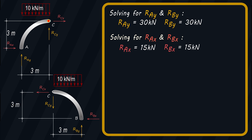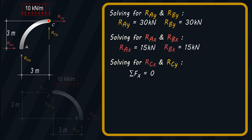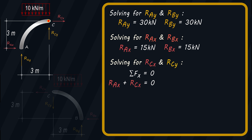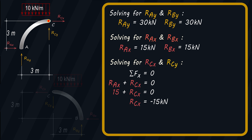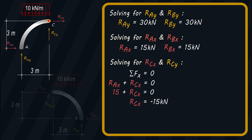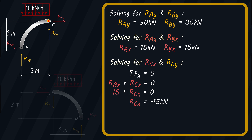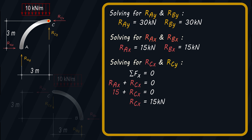Using the free body diagram for member AC, let us solve for RCX and RCY. Summing the forces along X equals zero, taking forces directed to the right as positive, we have: RAX plus RCX equals zero. Substituting the value of RAX, which is 15 kN, and solving for RCX, we get negative 15 kN. The negative sign does not mean the answer is wrong — it just means we made an error in our assumed direction of the reaction force. We can correct this by simply changing the direction, and the magnitude remains the same. So RCX is equal to 15 kN.